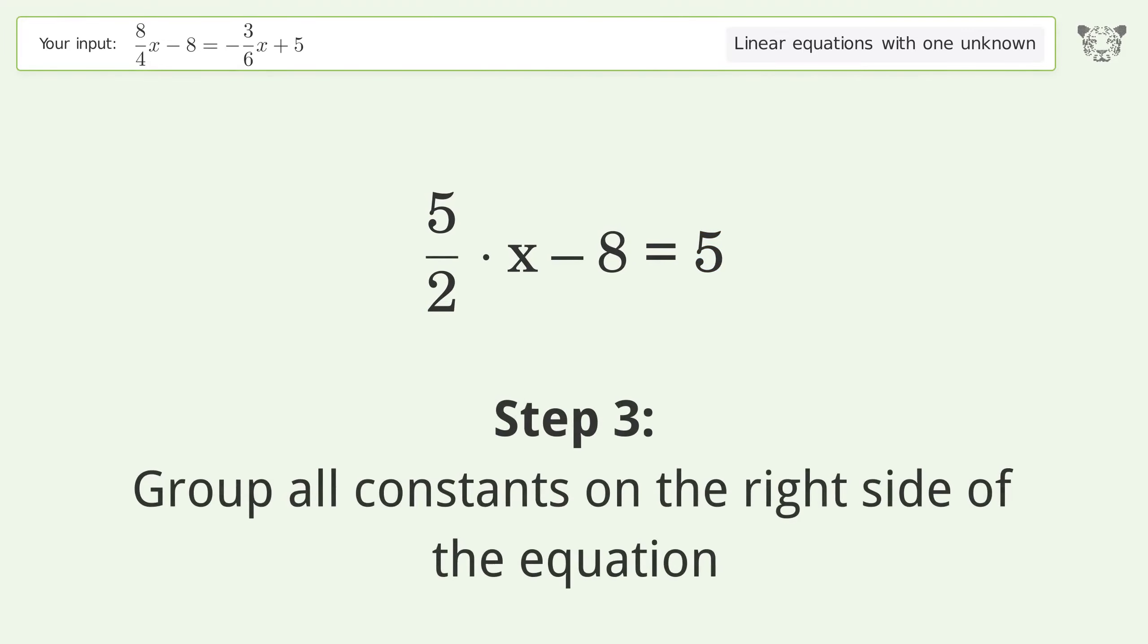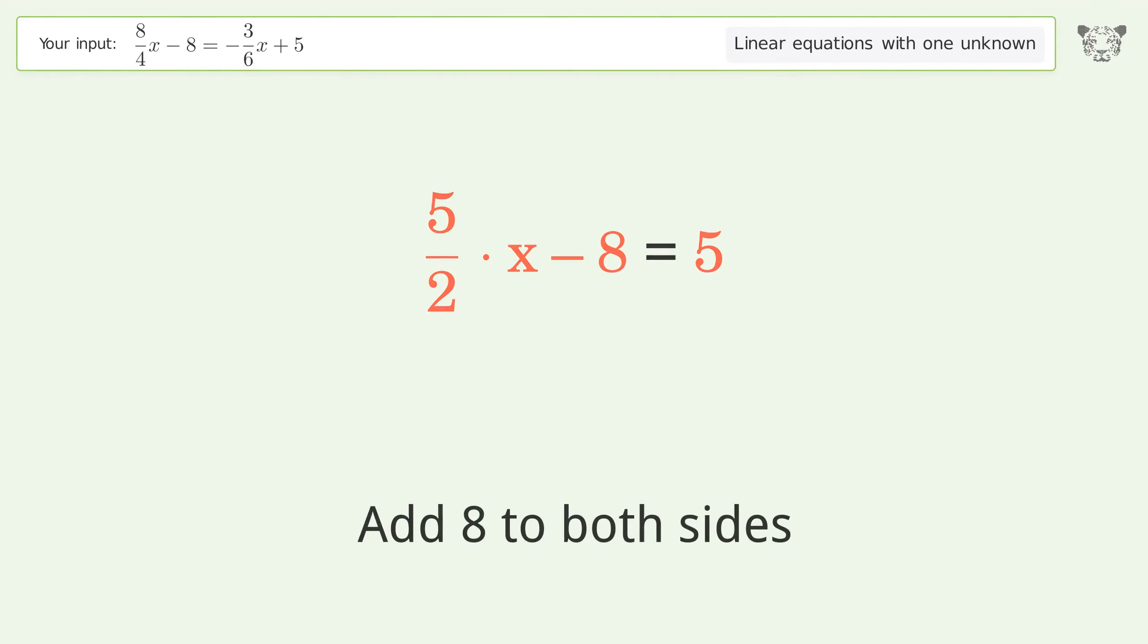Group all constants on the right side of the equation. Add 8 to both sides. Simplify the arithmetic.